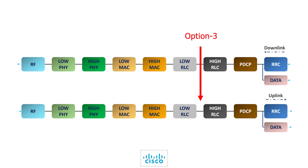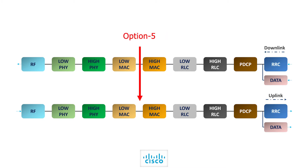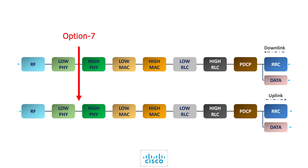Split option 3, or intra-RLC split, is when we put the RF, PHY, MAC and low RLC in the RU and DU and keep the remaining functions in the CU. Split option 4 is when MAC, PHY and RF are in the DU and RU, while RLC, PDCP and RRC are in the CU. Split option 5, or intra-MAC split, is when RF, PHY and some parts of the MAC layer — for example HARQ — are in the distributed and radio units, and upper layers are in the CU. Split option 6 is when physical and RF layers are in the distributed and radio units while the upper layers are in the centralized unit.